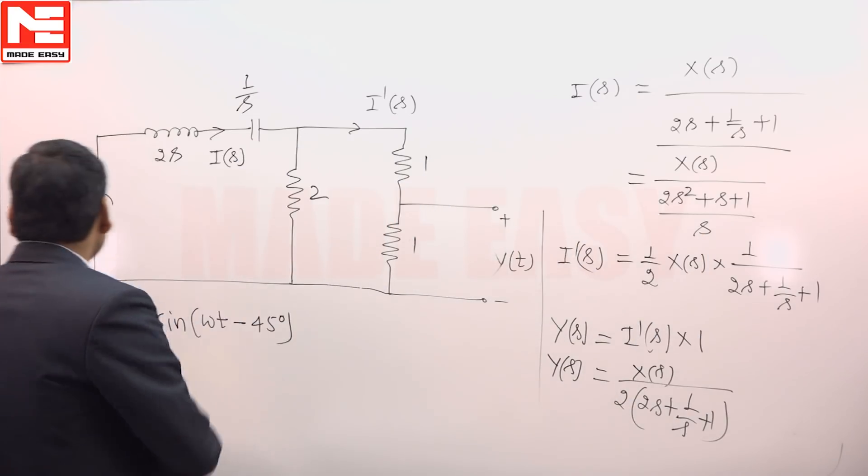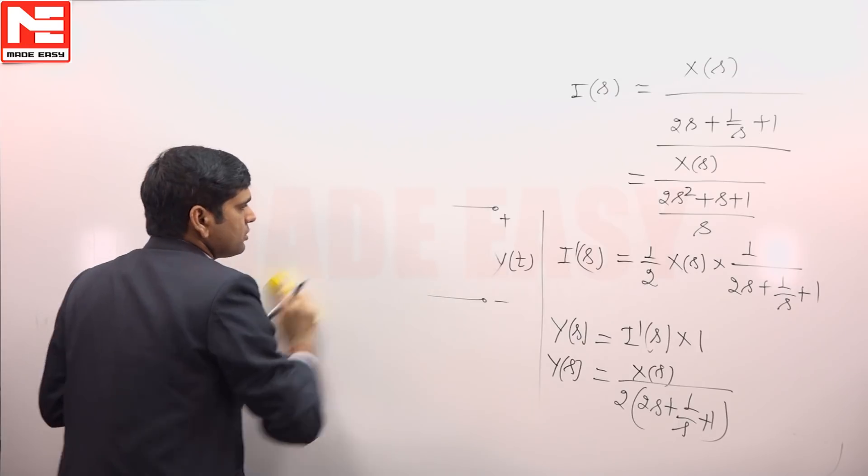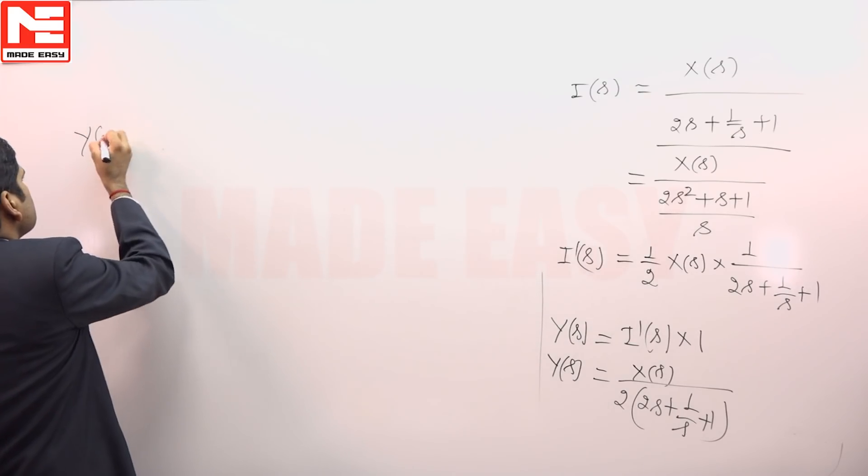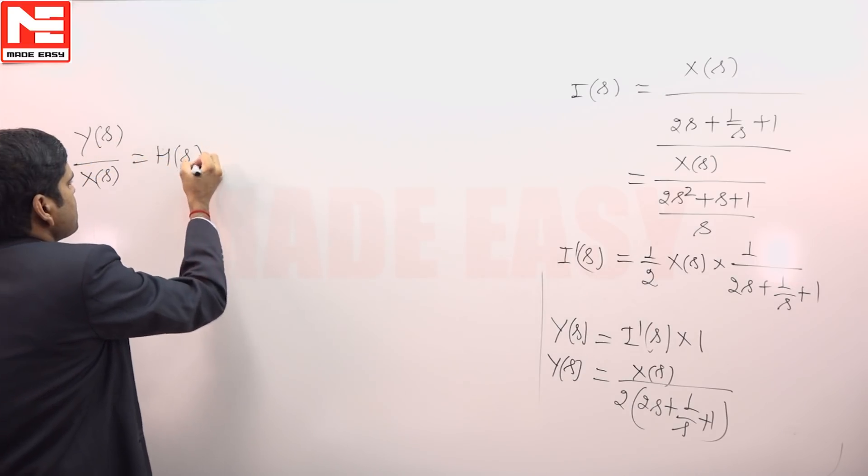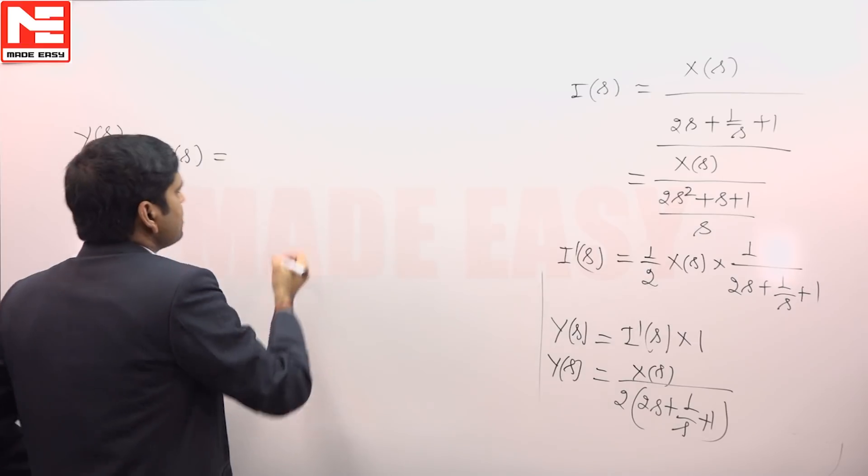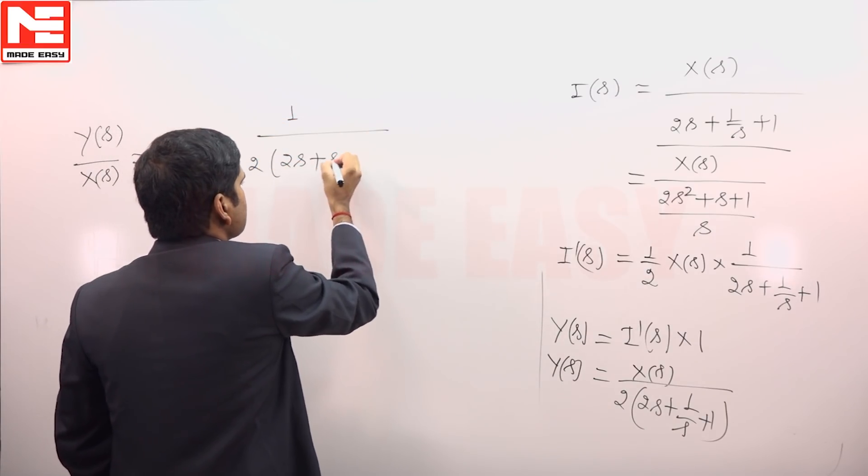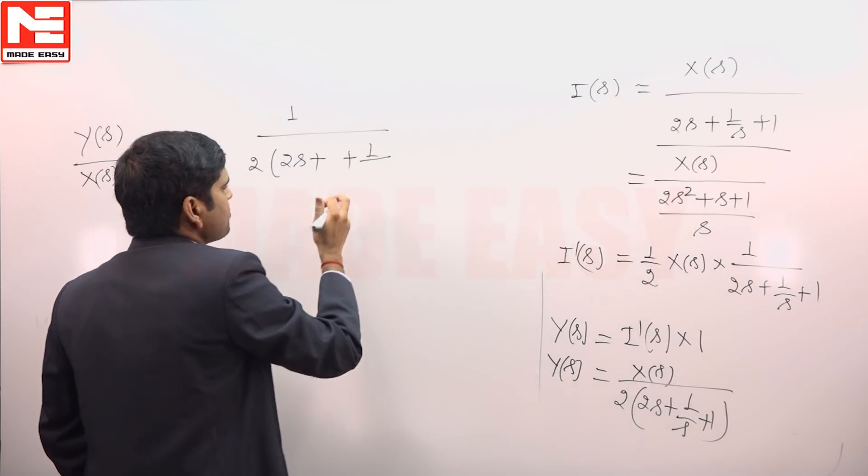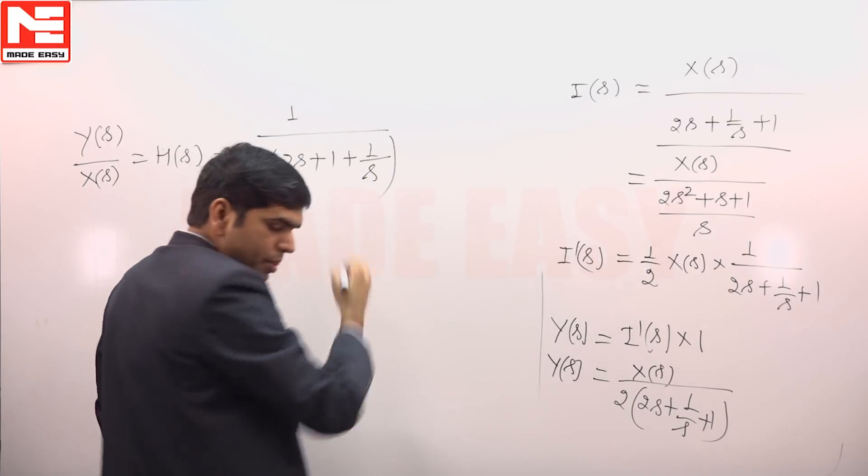This can be simplified as y(s)/x(s) which is equal to H(s) transfer function and this is 1/(2(2s + 1/s + 1)).